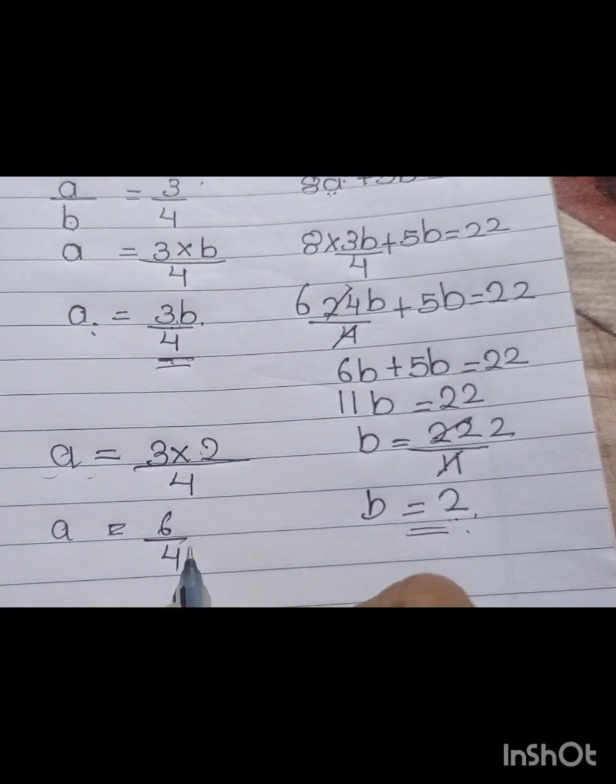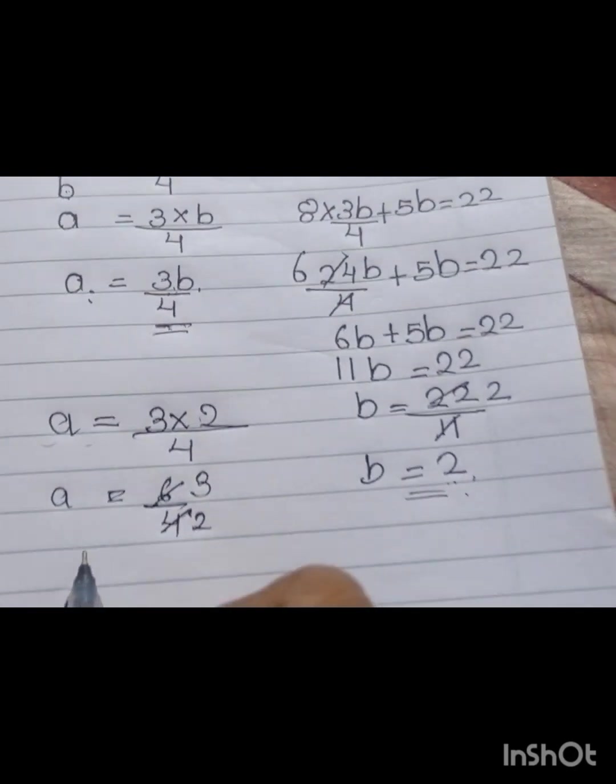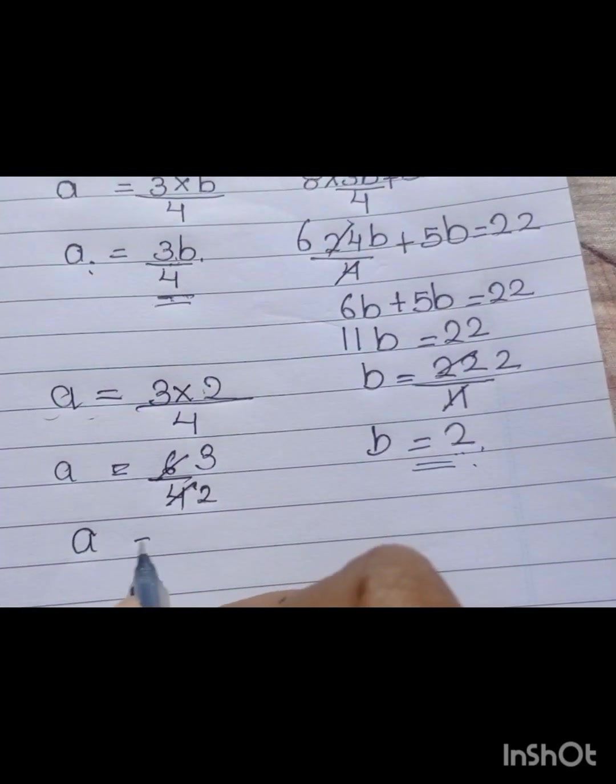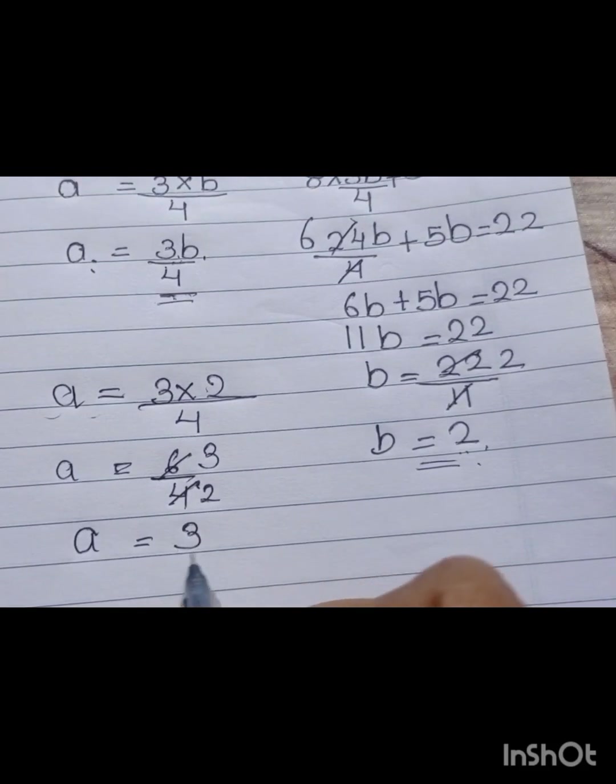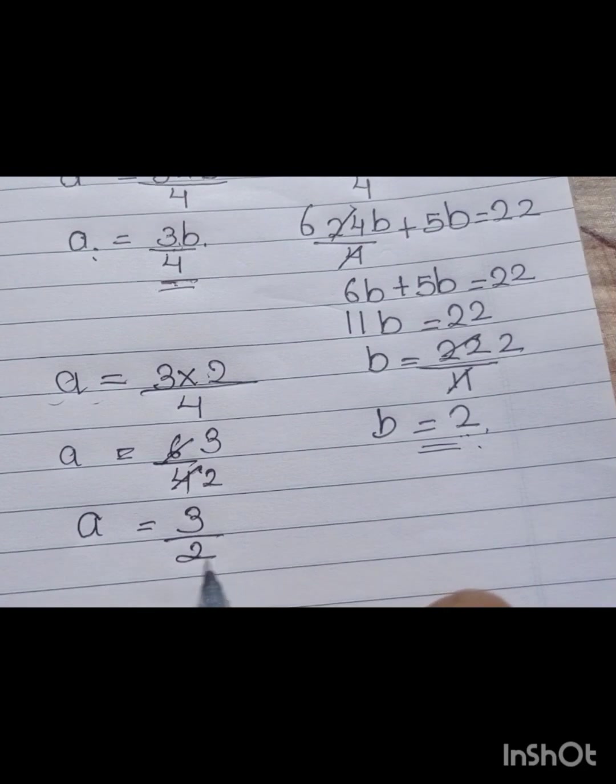Then, simplify by dividing by 2. A is equal to 3 by 2. So, 3 by 2 is the answer.